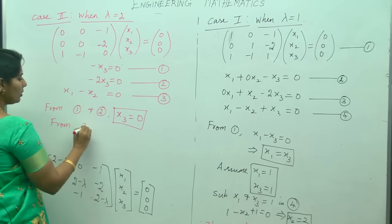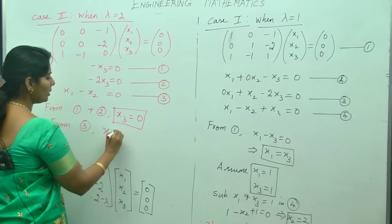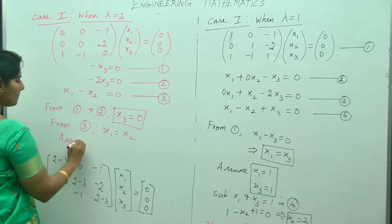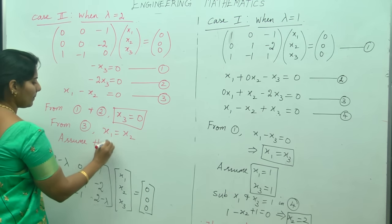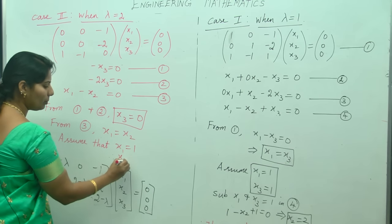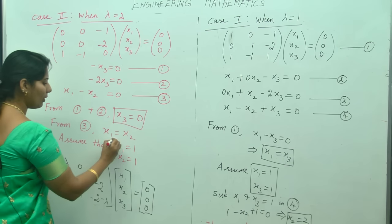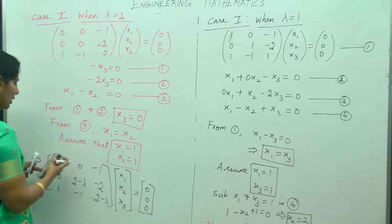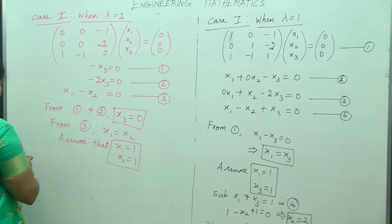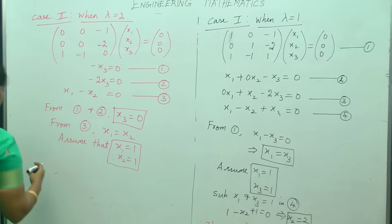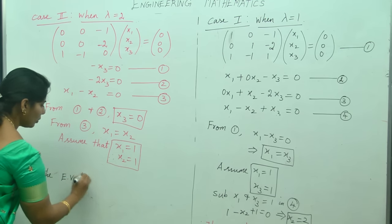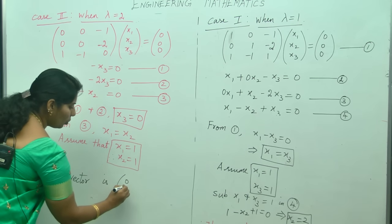From equation 3, x1 equals x2. Assume x1 equals 1; then obviously x2 equals 1. Therefore we have the values x1 equals 1, x2 equals 1, x3 equals 0. The eigenvector for lambda equals 2 is [1, 1, 0].